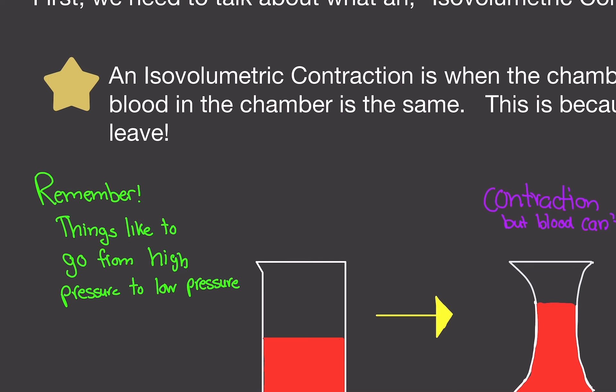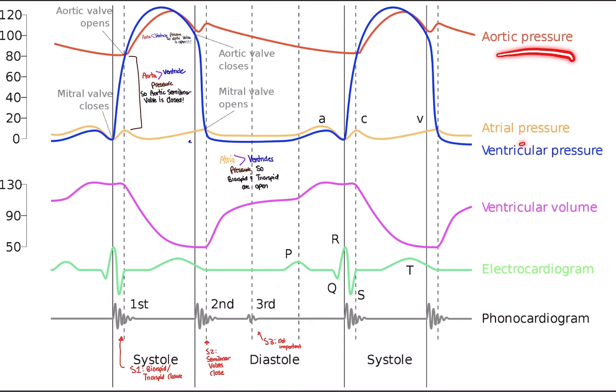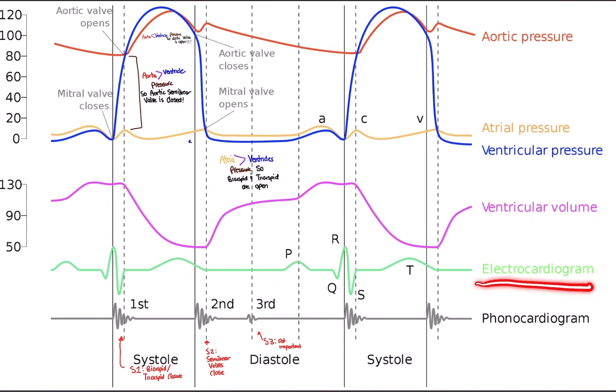As I said previously, what the Wiggers diagram looks at — what it measures, what it's showing us — is the pressure of the heart, the blood volume of the heart, and the EKG. In addition, an optional thing it can show you is something called a phonocardiogram.